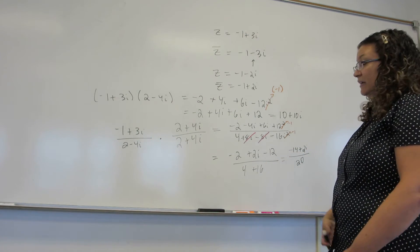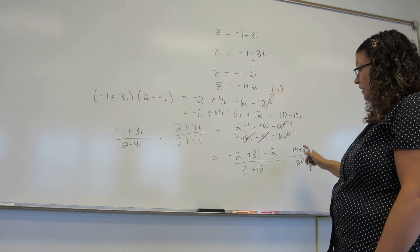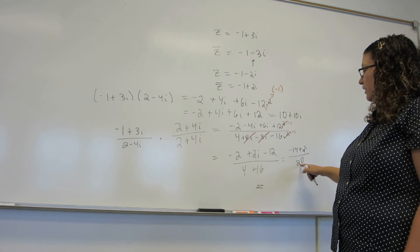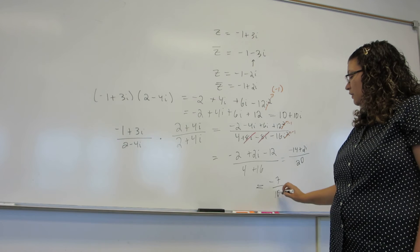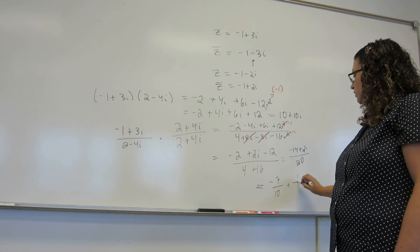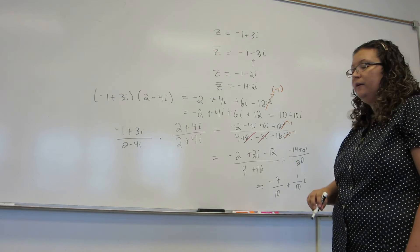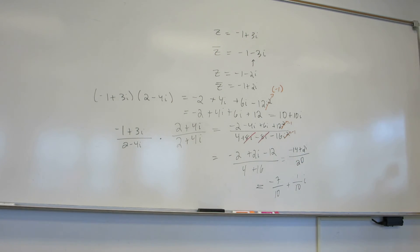Now, it's convention to always write complex numbers as a plus bi. So I'm actually going to separate these fractions out. Minus 14 divided by 20 is really minus 7 tenths. And 2 divided by 20 is really 1 tenth i. And we get our final answer. Just remember, the answer to a complex number question should never have i's in a denominator or powers of i.